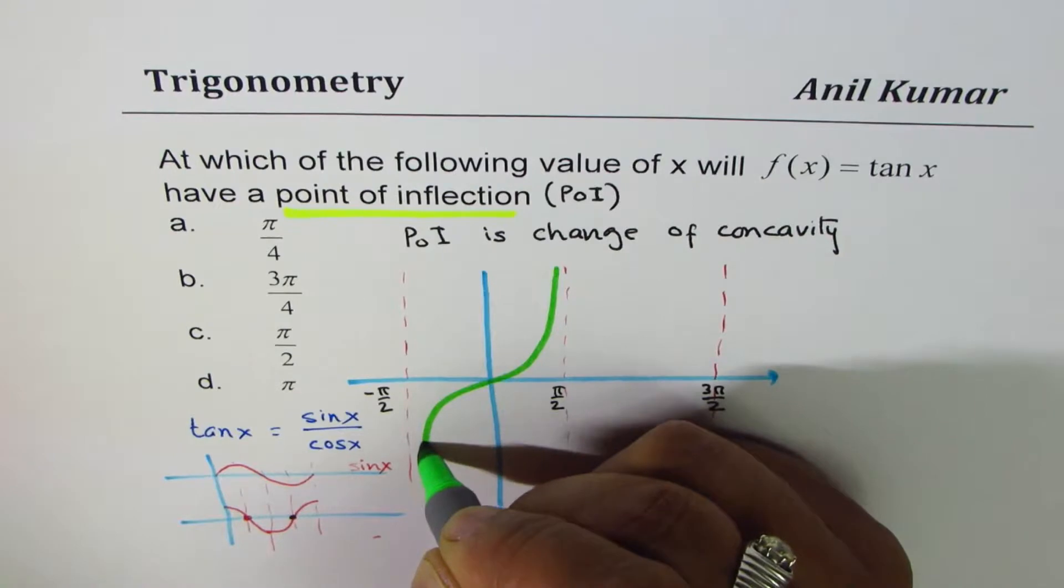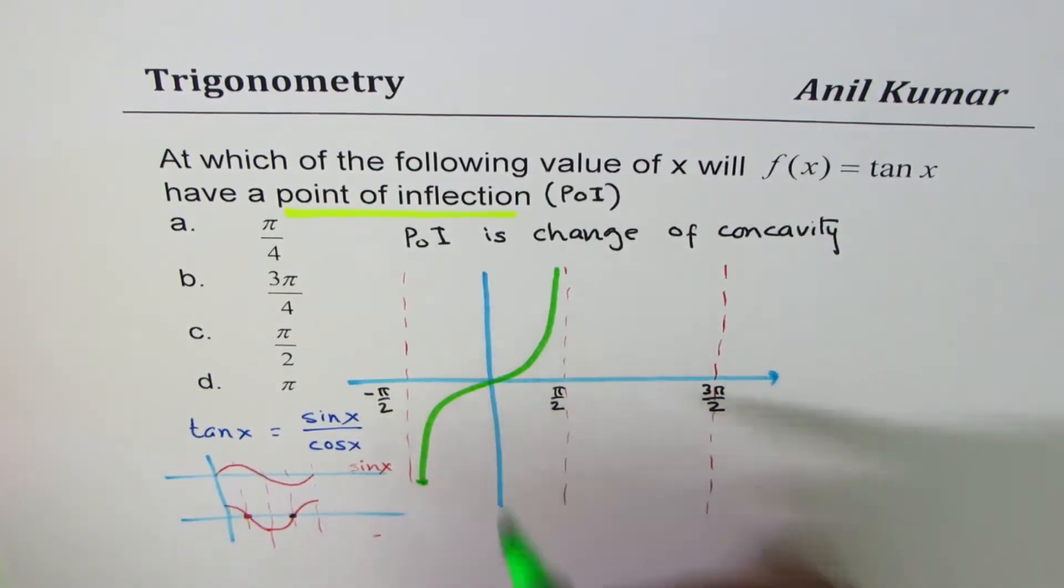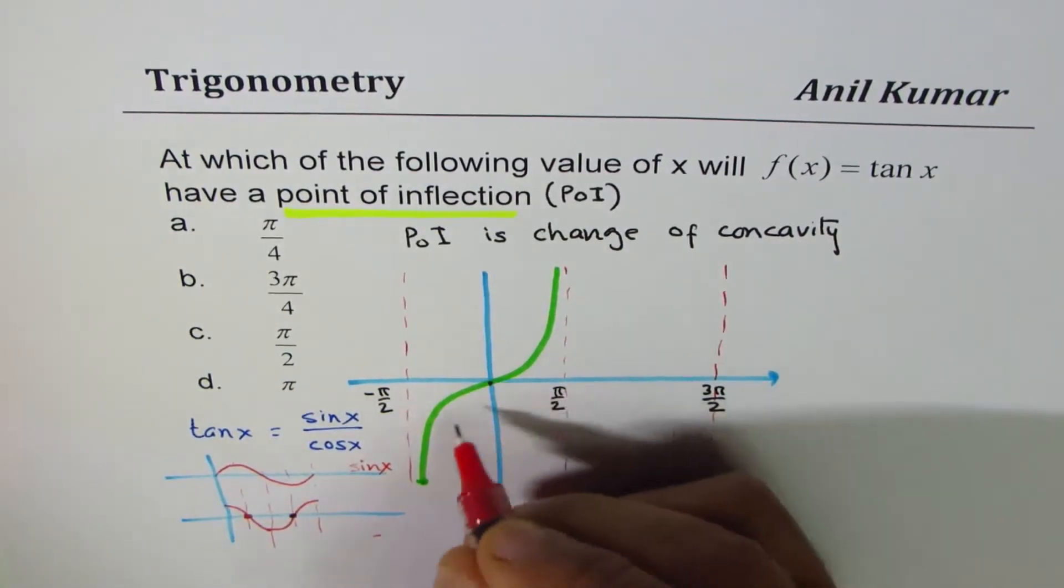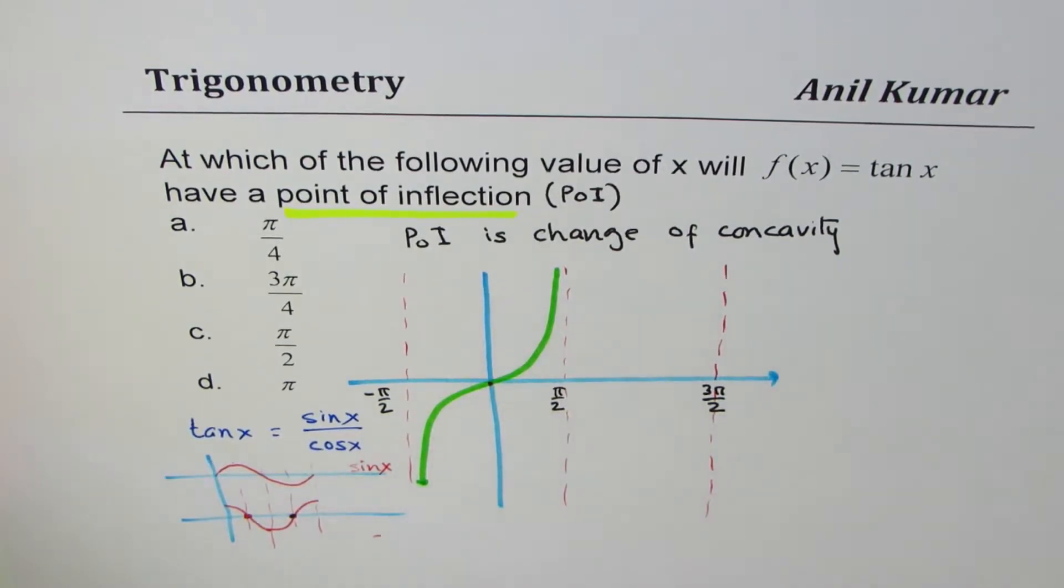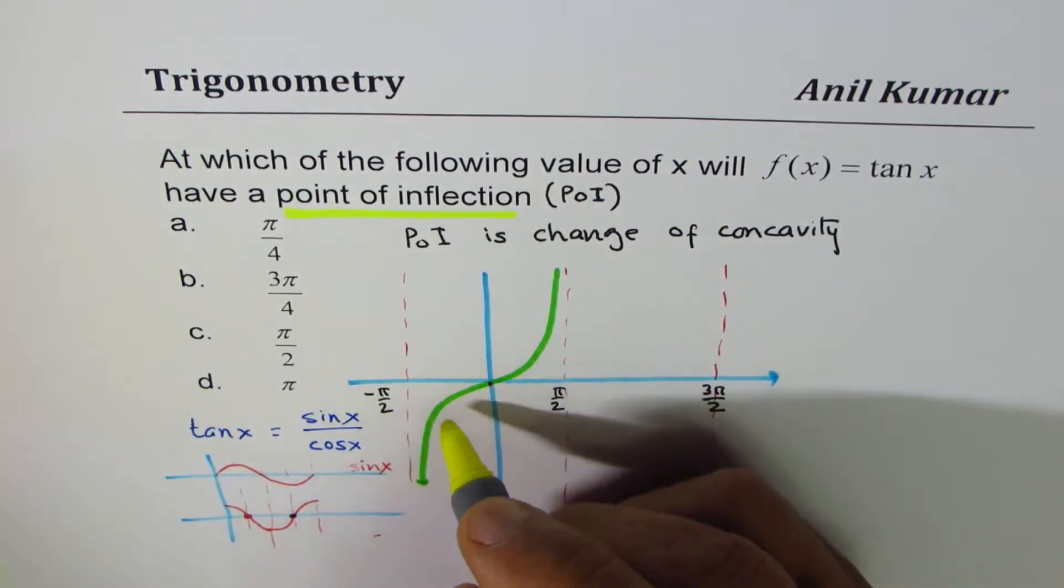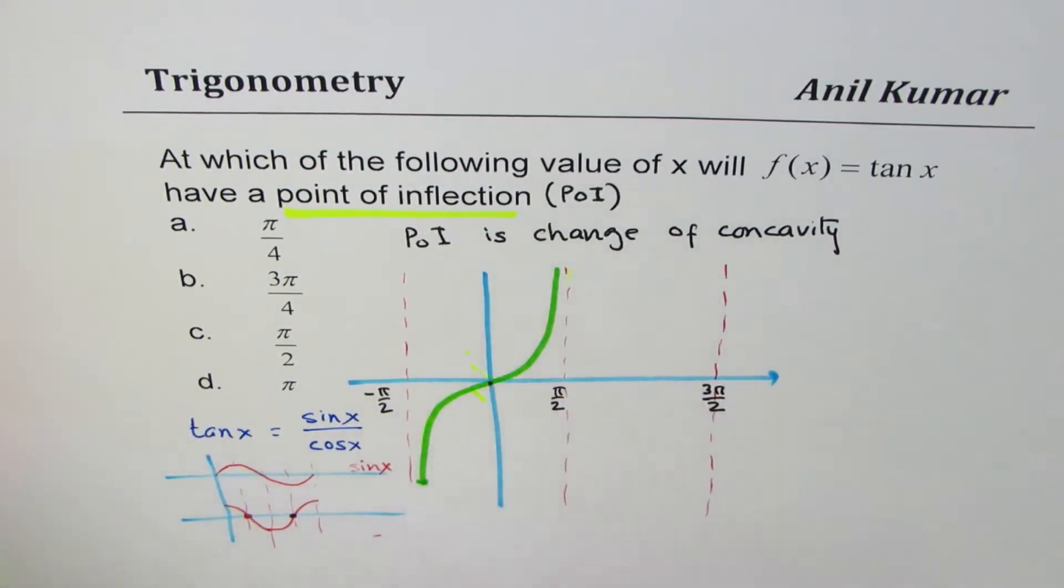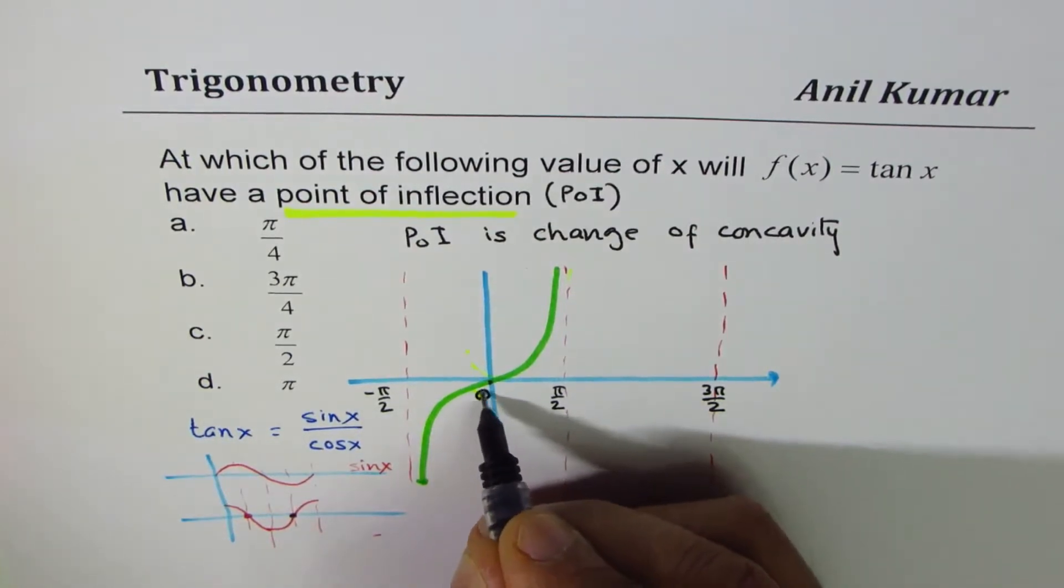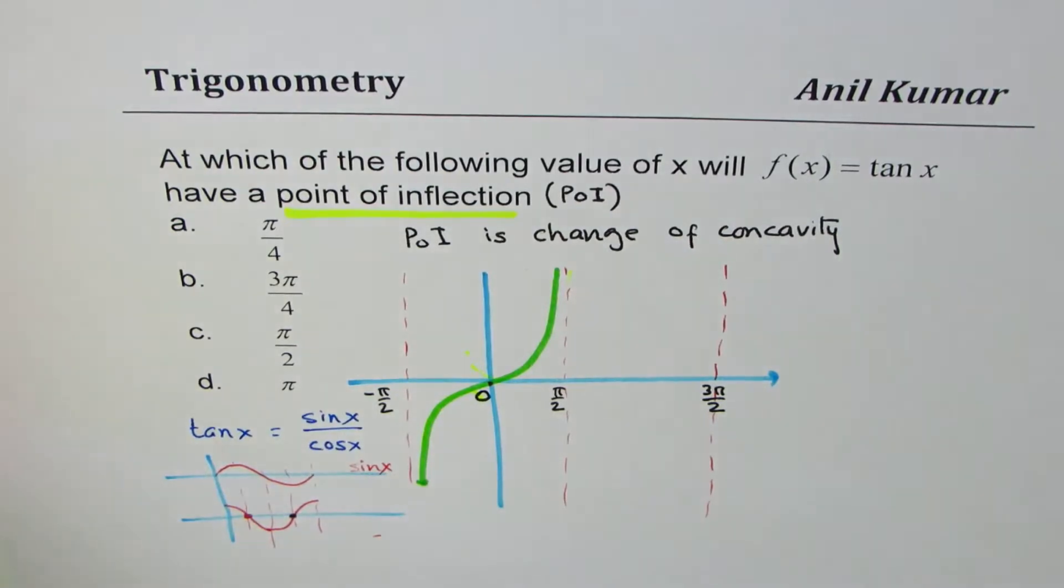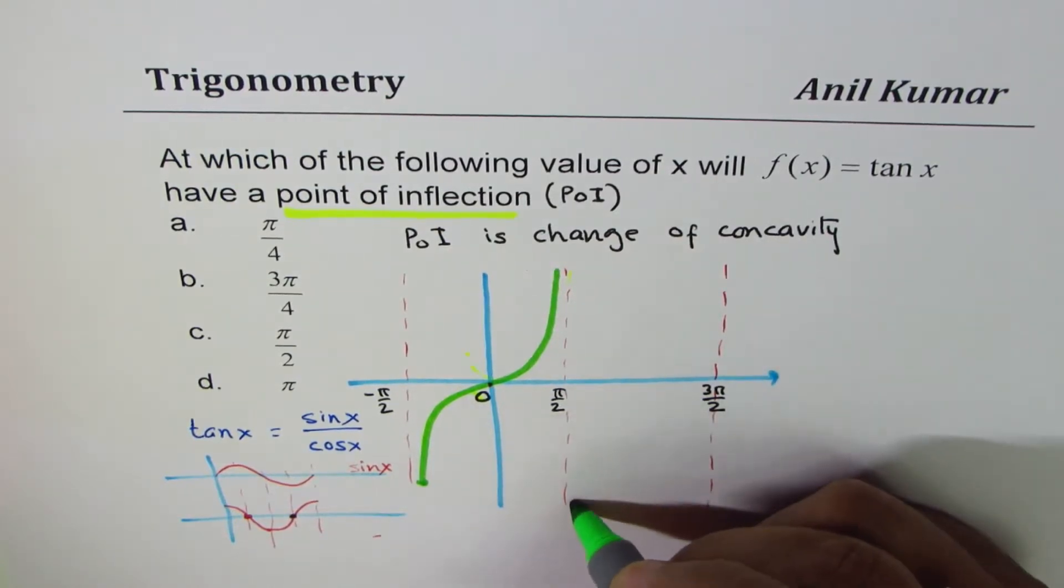So the function if you do this ratio is kind of like this - tan x, most of you know. At this point the concavity changes. You see it is concave down kind of like this, and this is concave up. The concavity changes, so we do have a point of inflection at 0, but 0 is not a choice here.